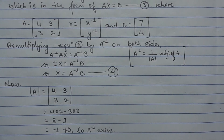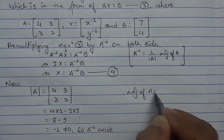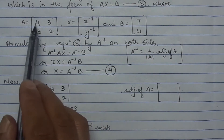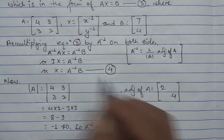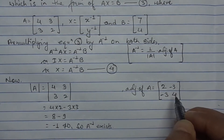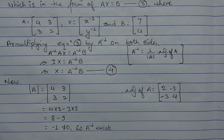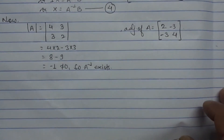The determinant is minus 1, which is not zero, so the inverse exists. If the determinant were 0, the matrix would be called a singular matrix and we cannot find its inverse. Now we need to find the adjoint of A. For a 2x2 matrix, the adjoint is found by swapping the principal diagonal elements (2 and 4) and changing the signs of the remaining elements: plus 3 becomes minus 3. So the adjoint of A is [2, -3; -3, 4].